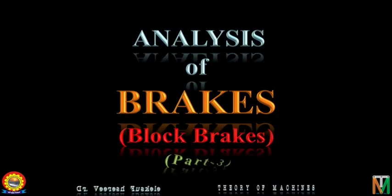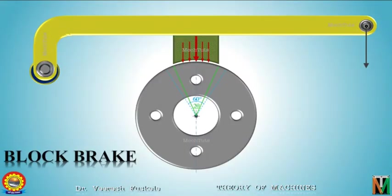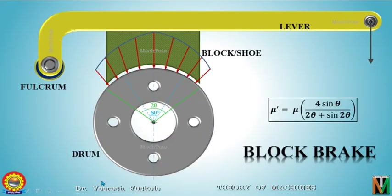Hello students, welcome to today's lecture on theory of machines. This is part 3 of the lecture on analysis of block brakes. In the previous two lectures we discussed the pressure distribution in both cases of angle of contact less than 60 degrees and greater than 60 degrees, and we also saw the equation of equivalent coefficient of friction.